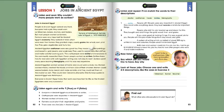Jobs in Ancient Egypt. People in Ancient Egypt worked very hard. Everyone had a job. They could work as fishermen, bakers, doctors, and traders, but most people worked as farmers.